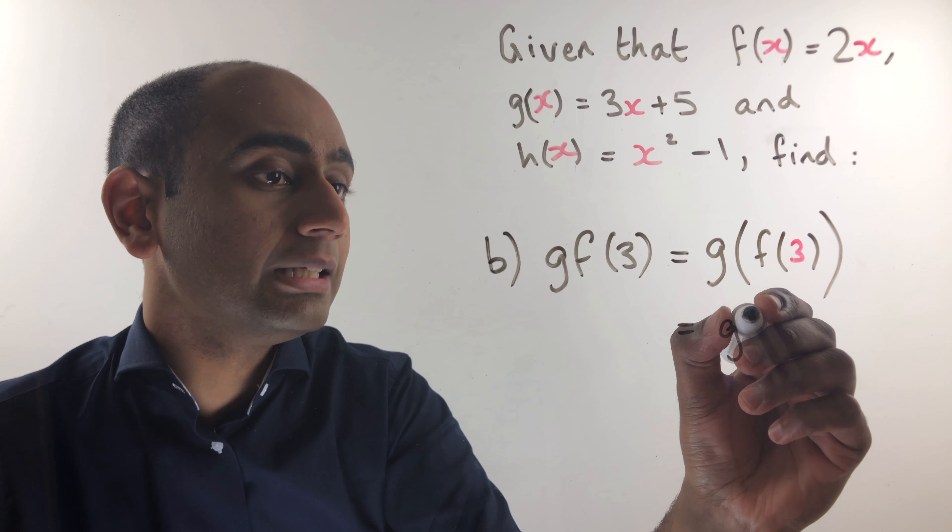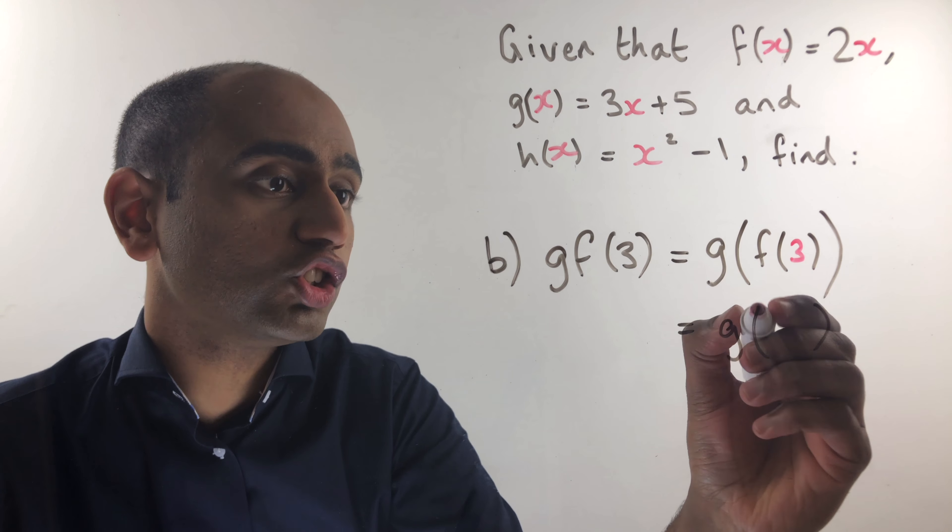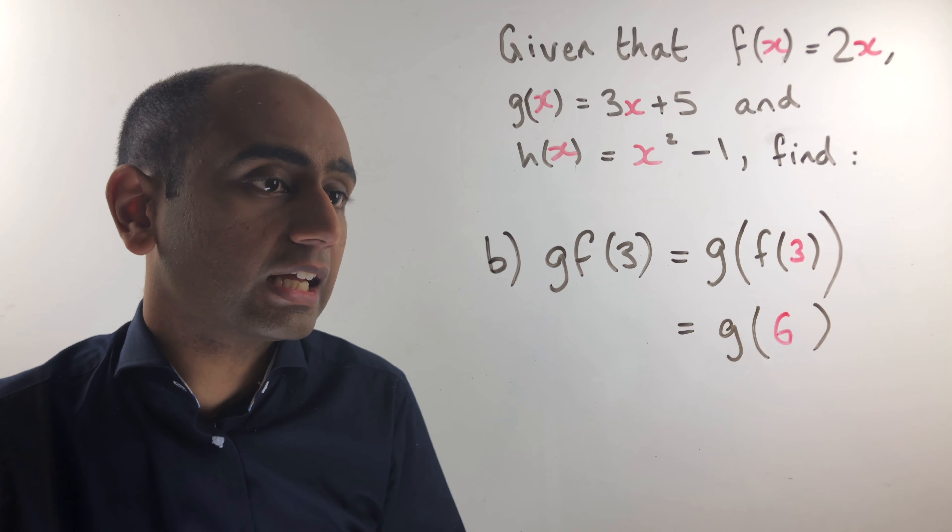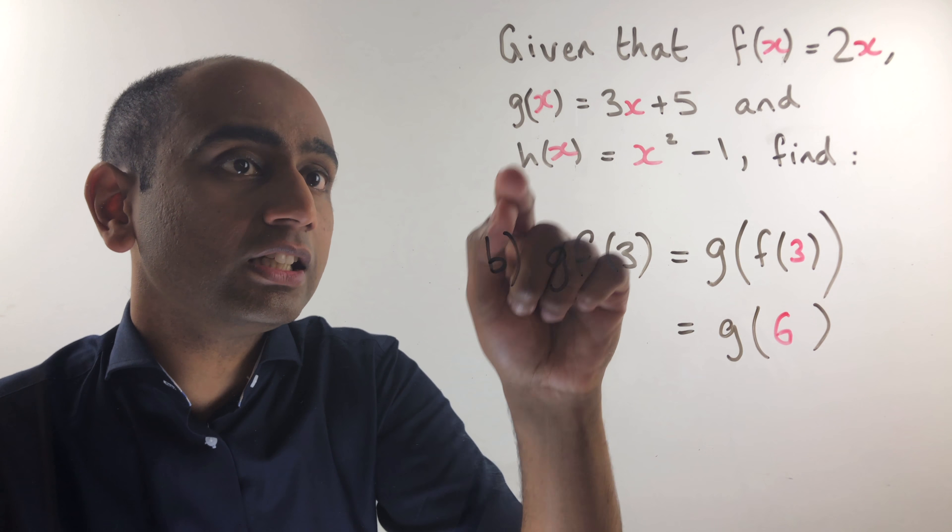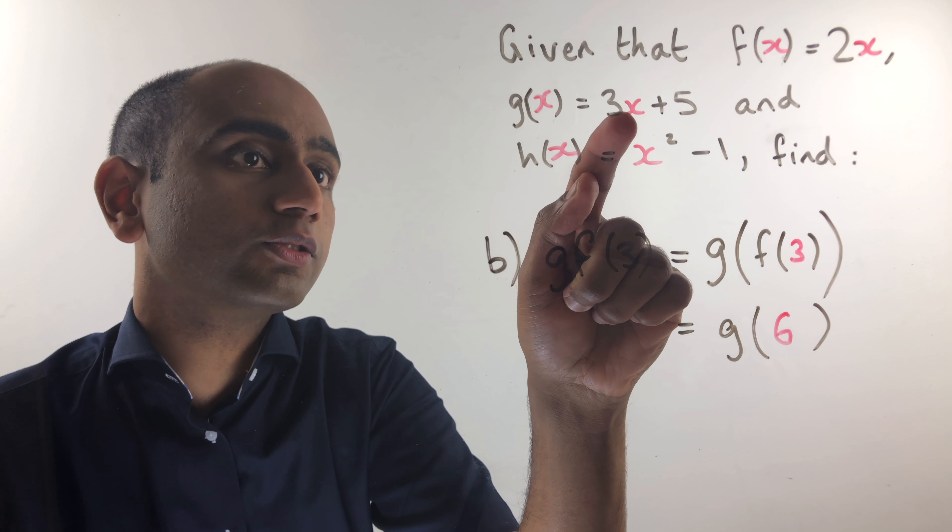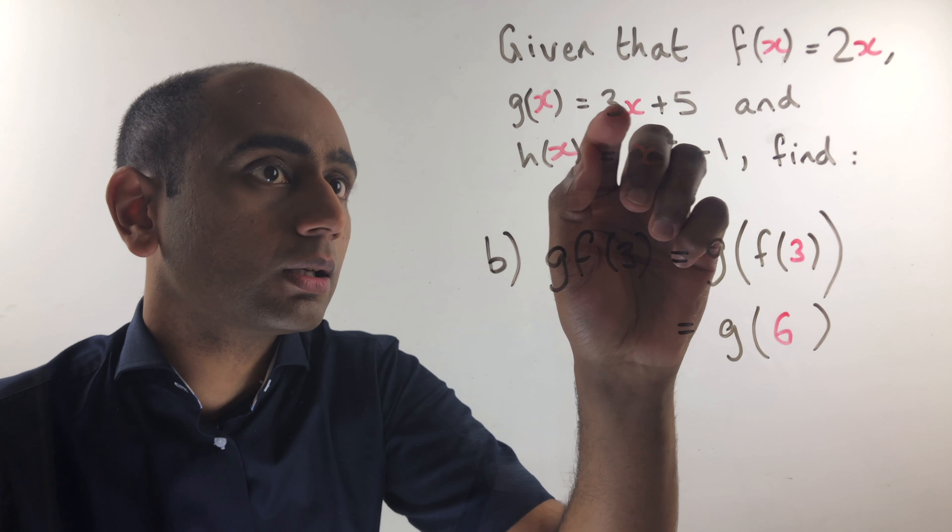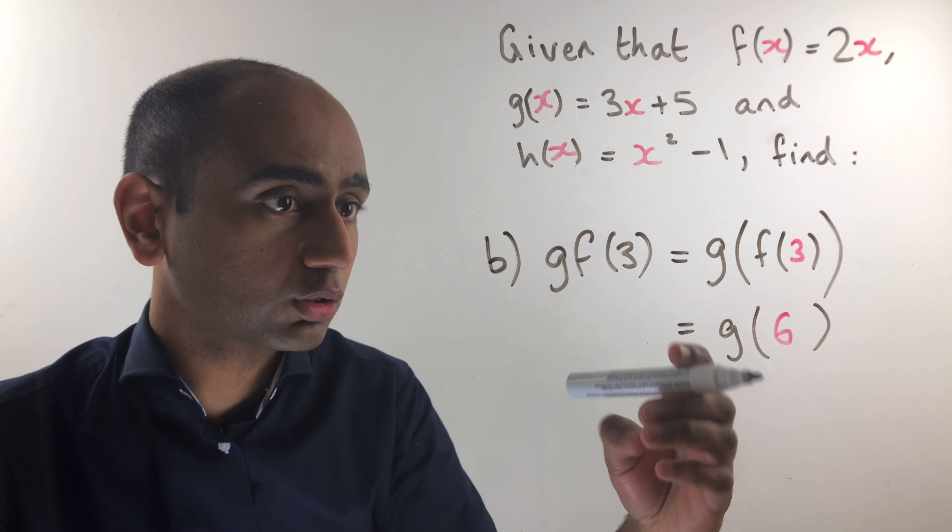So we're going to input 6 into the function g. And inputting 6 into g we're going to get 3 lots of 6 which is 18 plus 5 which gives us 23.